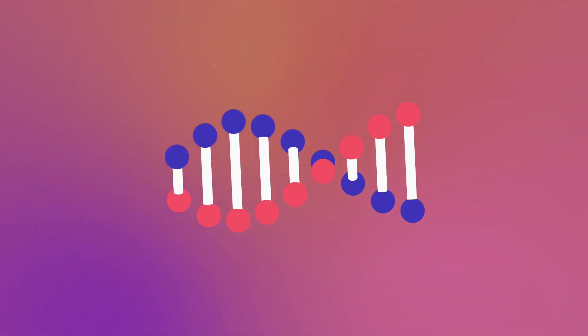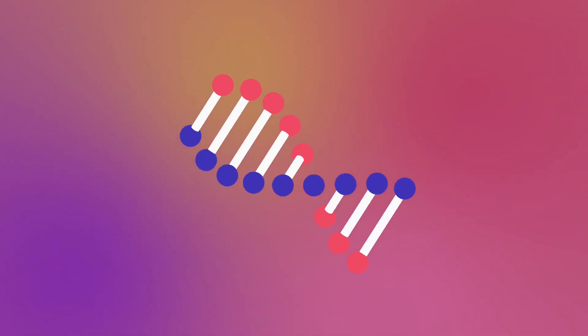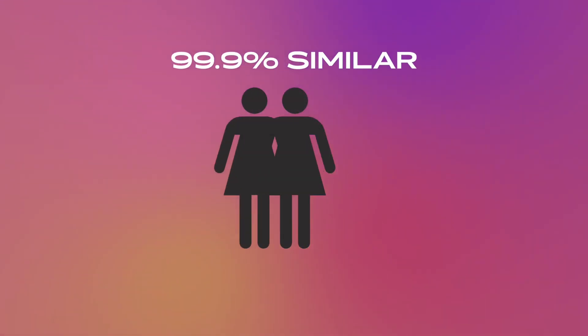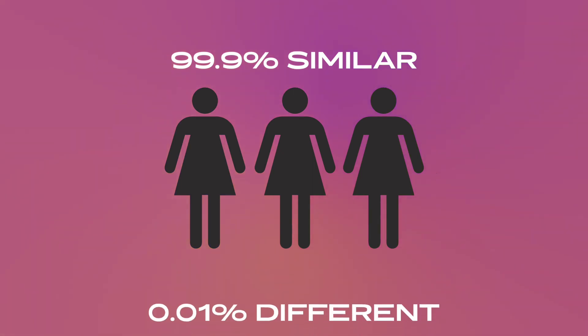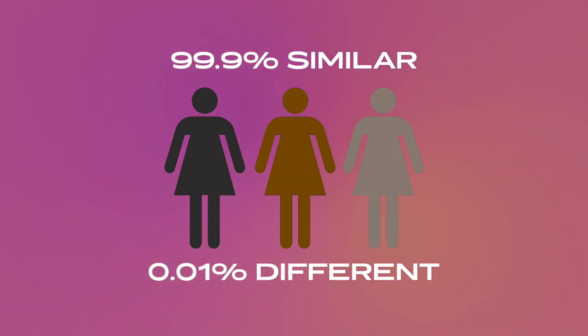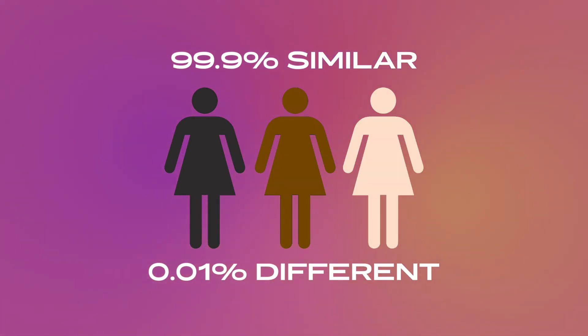Everyone knows what DNA is — the hereditary material that contains information about a species. Most of the time, like between us humans, 99.9% of DNA is similar, but even a mere 0.01% can produce so many differences.